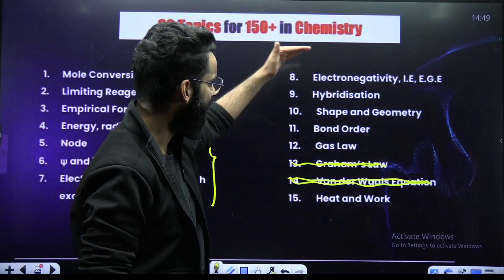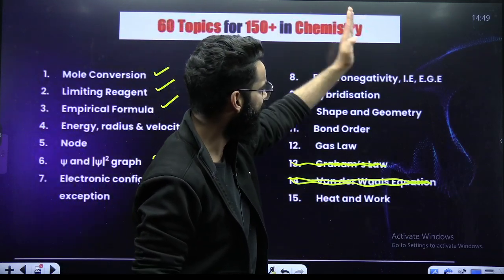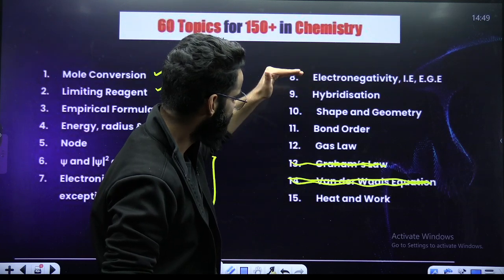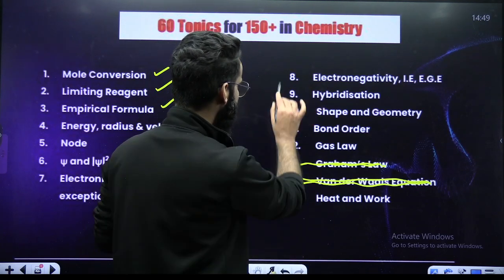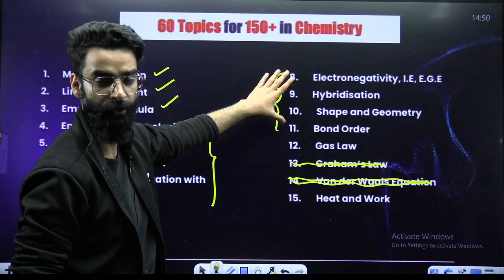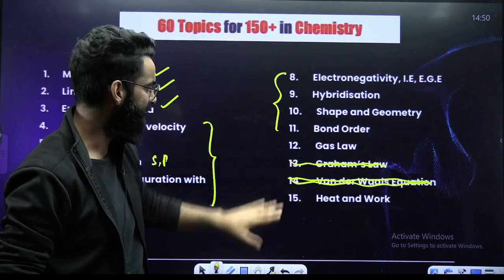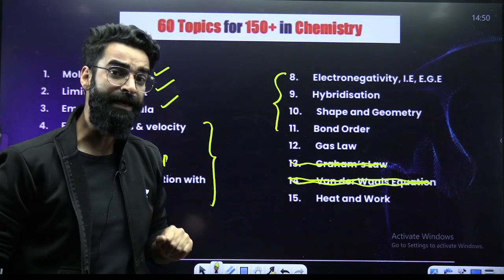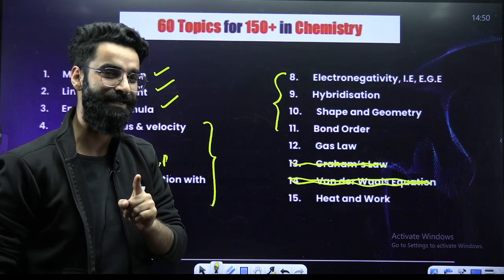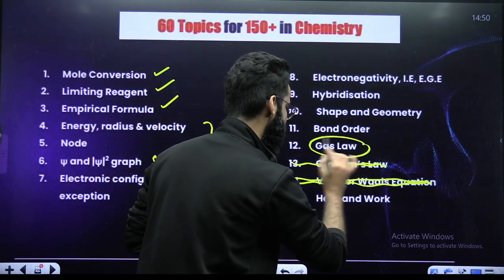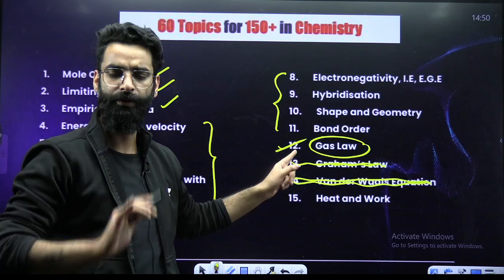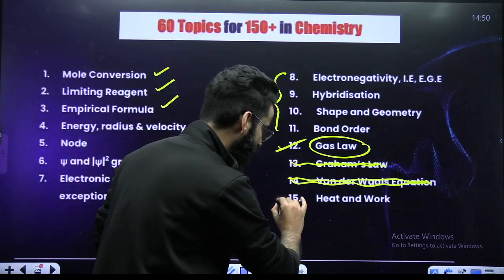Then you have got Electronegativity, Ionization Energy, Electron Gain Enthalpy, Hybridization, Shape and Geometry, Bond Order — this is from the chapter Chemical Bonding. Short questions you'll get from these topics. Then in your gaseous state — states of matter which is deleted basically — you have to do Gas Laws, because Gas Laws are now included in Thermodynamics.